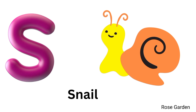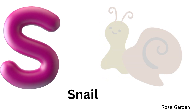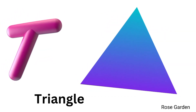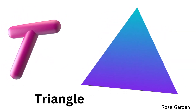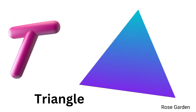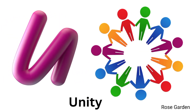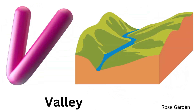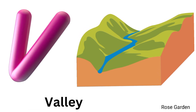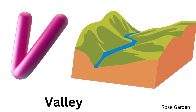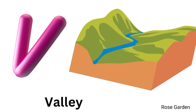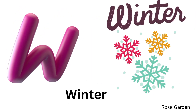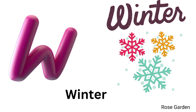S for snail. T for triangle. U for unity. V for valley. W for winter.